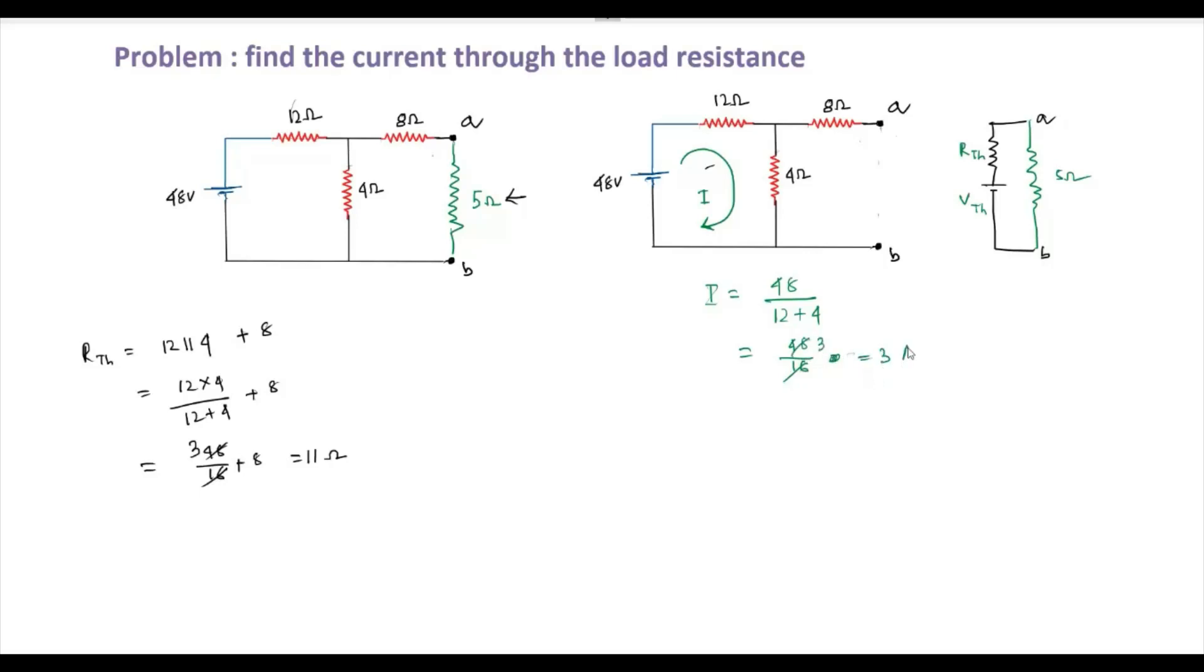The current is 3 amperes. The voltage VTH equals I into 4, which is 3 into 4 equals 12 volts. So VTH equals 12 volts. The Thevenin equivalent circuit has RTH of 11 ohms and VTH of 12 volts with the load resistance.